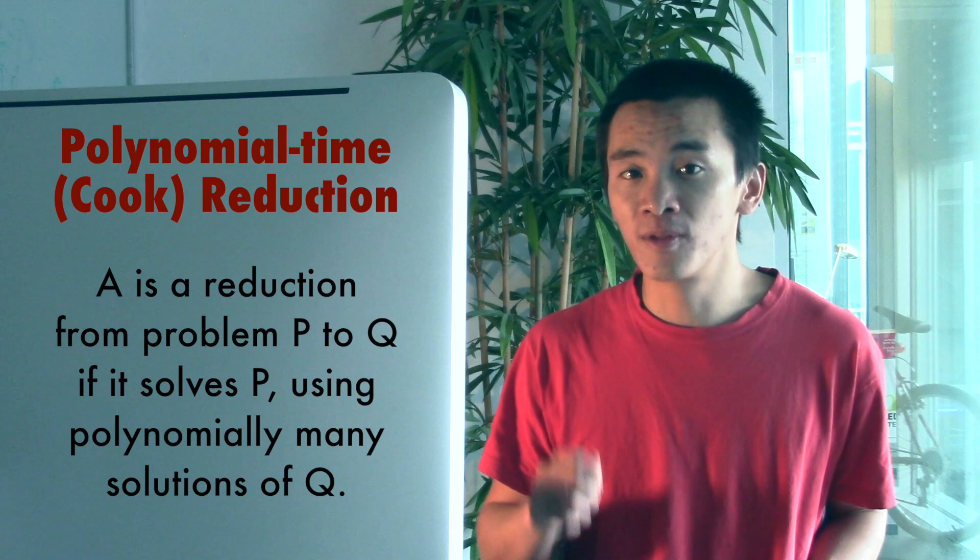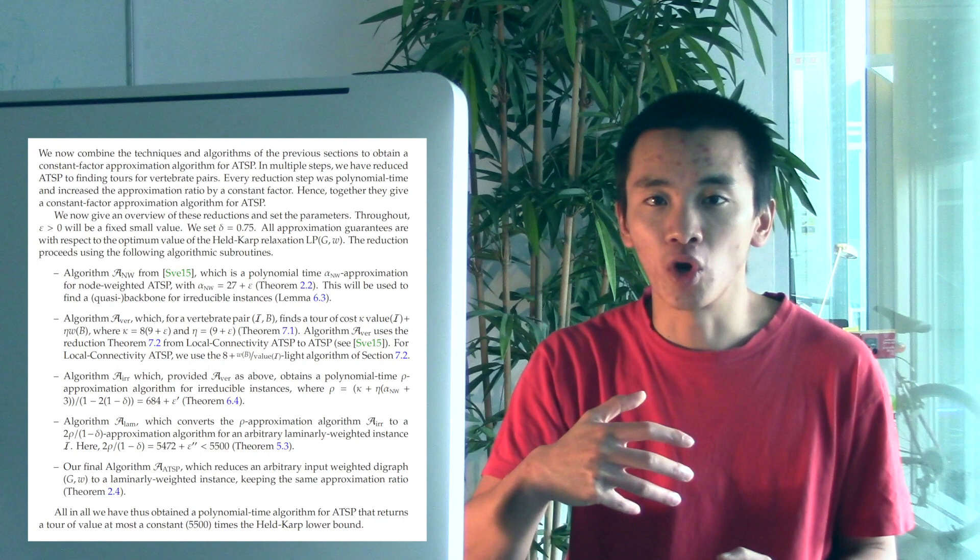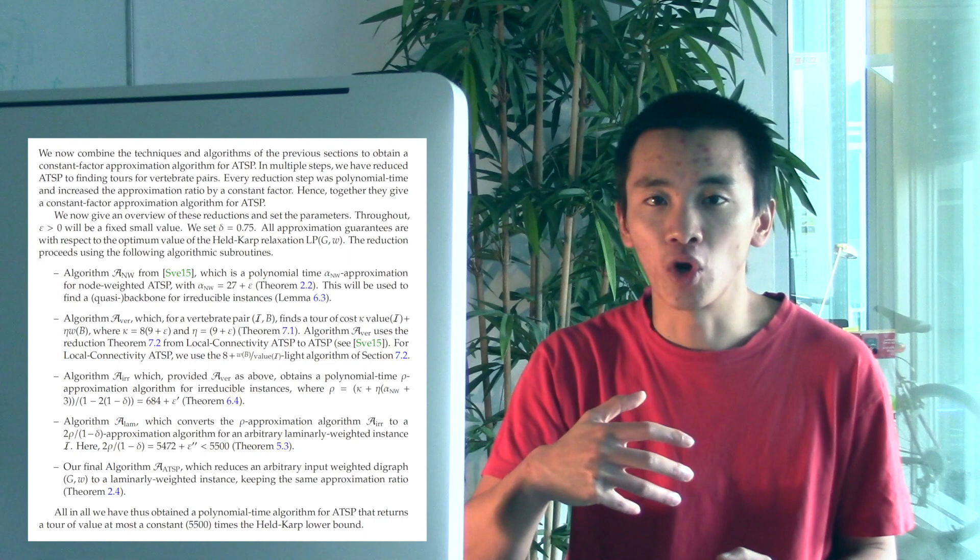The proof consists of mostly a series of reductions. A reduction is an efficient algorithm that uses only a polynomial number of times the solutions of simpler cases to construct a solution of the general case. What we are doing in the article is really a sequence of reductions — a sequence of simpler and simpler cases. At each step, Svensson, Tarnowski and Végh determine some algorithm that uses solutions of simpler cases to construct a solution of harder cases.